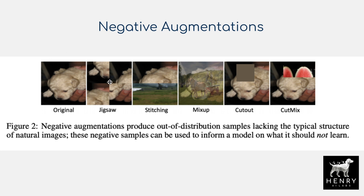What makes this out of distribution is the corrupted global structure. When passing this into the GAN framework, the discriminator — because these augmentations are labeled as out-of-distribution — should start to pick up on the feature of global structure. This loss signal is passed down to the generator as well, which will also start generating images with proper global structure, since the discriminator knows these corrupted transformations are out of distribution and classifies them as fake.